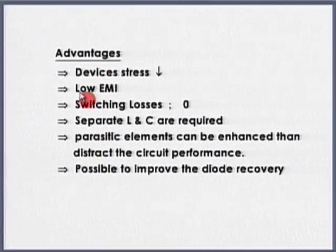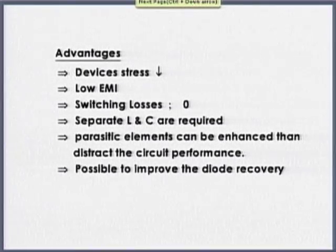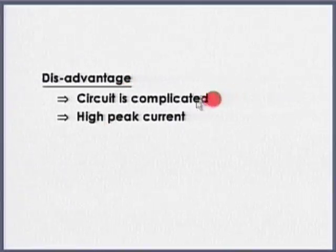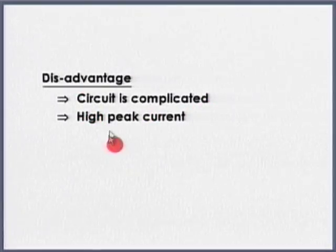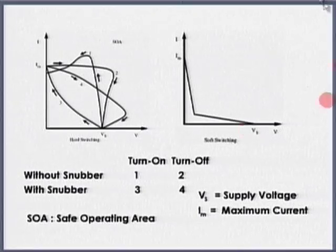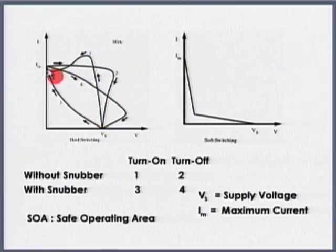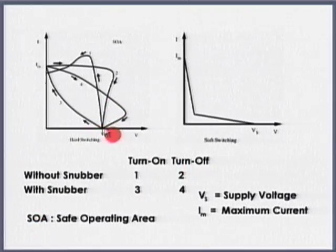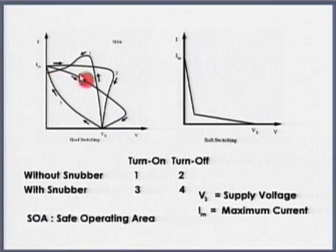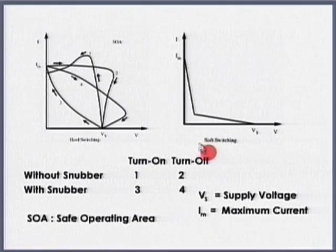This all depends on the circuit topology and the type of control. Disadvantages - everything comes with a price: circuit becomes complicated, and you might have slight peak currents. See the safe operating area: without snubber - case 1 and 2 - during turn-on and during turn-off; with snubber I am controlling it, thereby losses in the device are reduced and they are transferred to some other part. This is the soft switching approach.